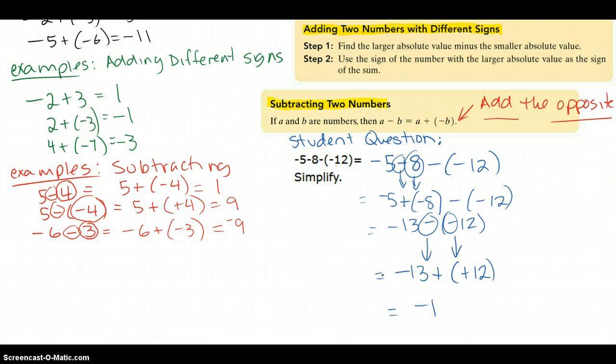Or just go for logic. Once it's addition, logic is okay. 13 in the hole plus you win 12, you're still down negative 1.